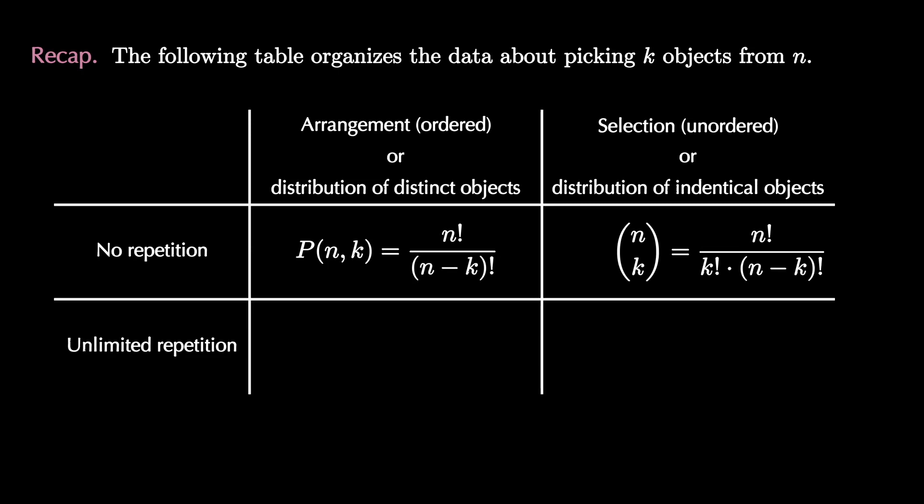In the upper right box there are n choose k ways to select k objects from n where we don't worry about order and we don't allow repetition. In the bottom left box there are n to the k ways to select an ordered arrangement where we allow unlimited repetition. This is because we use the product rule and we have k stages where we have n choices at each stage. The final entry in this table comes from today's video where we see there are (k+n-1) choose (n-1) ways to select k objects in an unordered fashion from a collection of n objects where we allow as much repetition as we need.